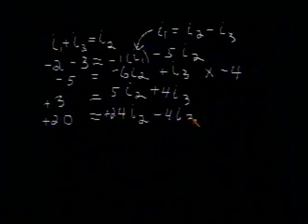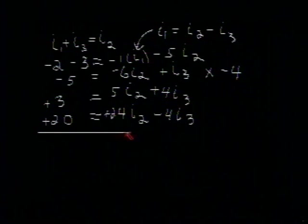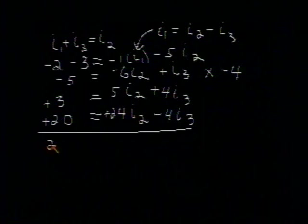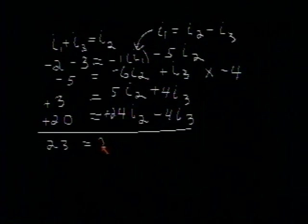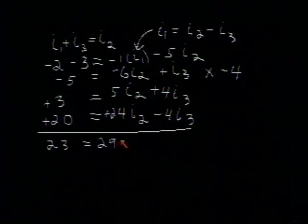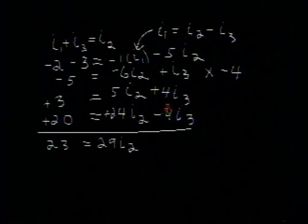Now, if we add these two equations together. On the left, we have 23. On the right, 24 and 5, 29I2. And minus 4I3 plus 4I3 is 0.